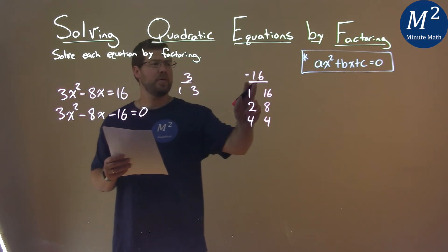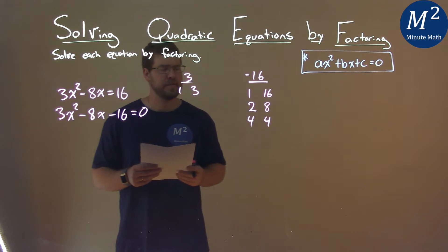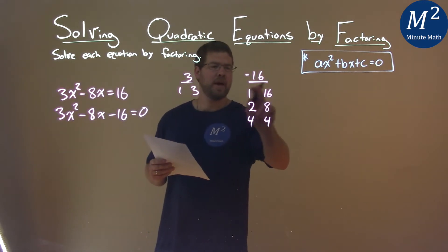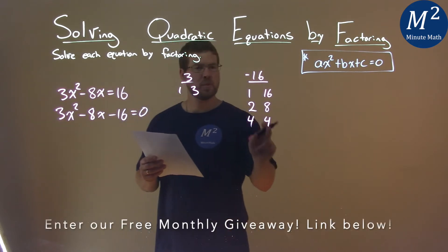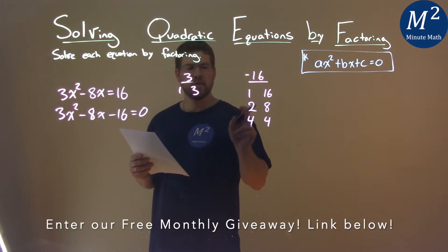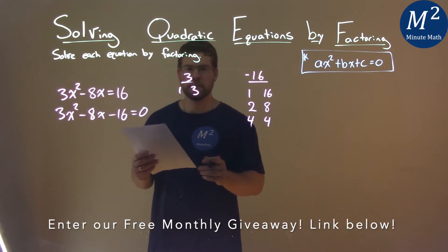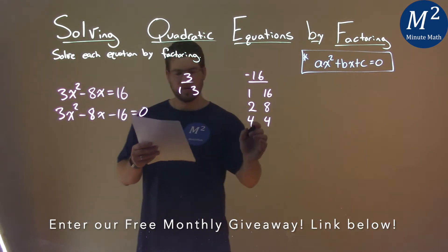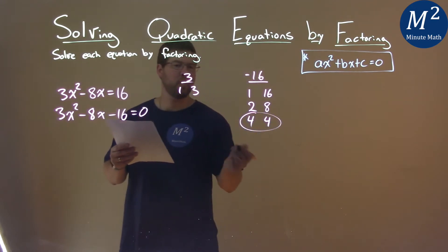So now, since it's a negative 16, and our b value is negative, one of these numbers in a pair has to be negative. So we have to ask ourselves, 3 times which one plus the other one equals a negative 8, and that'd be a negative. And that's actually the 4's here. The 4's is what we're going to deal with. One of them will be a negative.